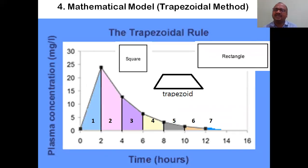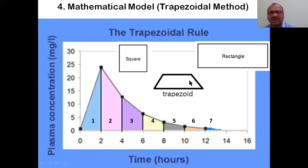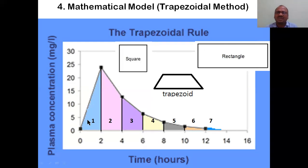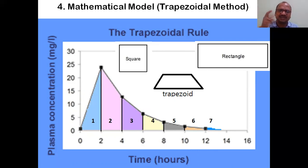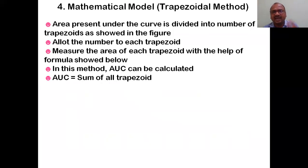The fourth method is the trapezoidal method. A trapezoid is different from a square, rectangle, or triangle - it has a specific shape. After drawing the curve, you draw vertical lines, dividing the entire curve into sections. Each section is called a trapezoid - trapezoid one, two, three, four, five, six, and so on. You allot a number to each trapezoid.